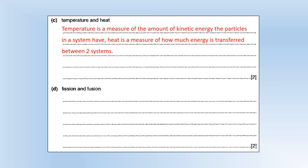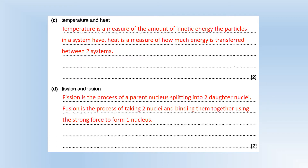Fission and fusion. Fission is where you take one nucleus — called the parent — and split it into two daughter nuclei. Fusion is the opposite process: you take two nuclei and bind them together using the strong force to form one nucleus.